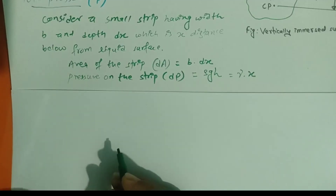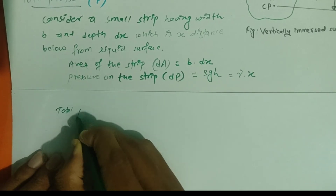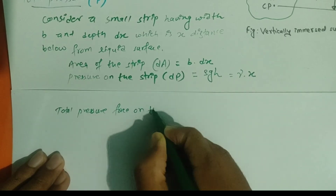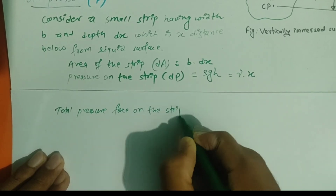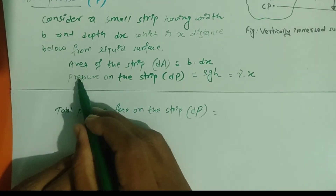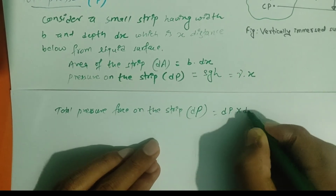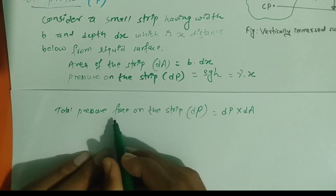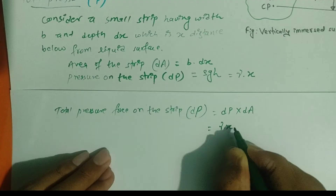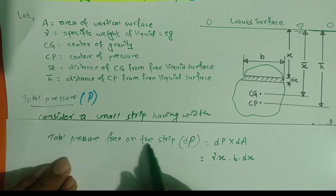Now we calculate the total pressure force on the strip: dP = pressure × area = γx · b·dx. So dP = γ·x·b·dx.